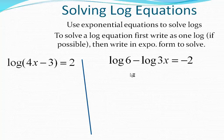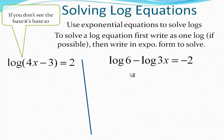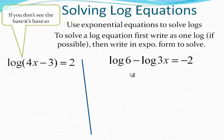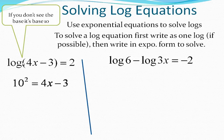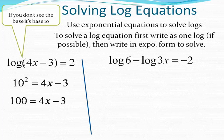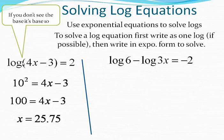One more here, solving log equations. Very similar. These are just a couple more examples using the properties. We wanted to identify that if you don't see a base, it's going to be a base 10. So we would write that as 10 to the 2nd power equals 4x minus 3. 10 to the 2nd power is 100. Add 3 to both sides. Divide by 4 on both sides, and that's pretty much it.